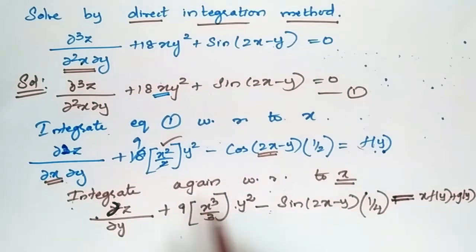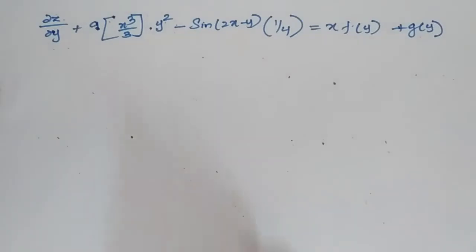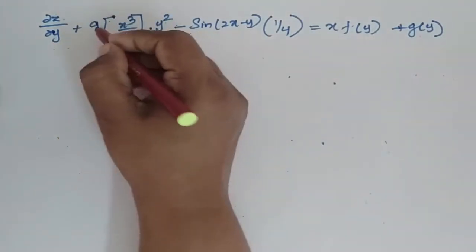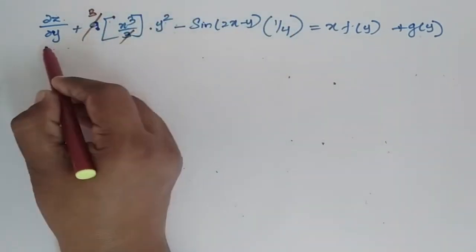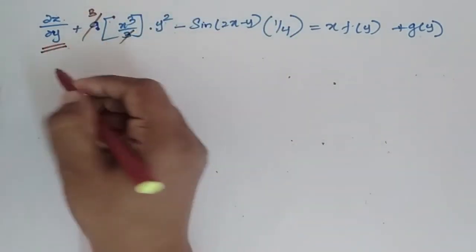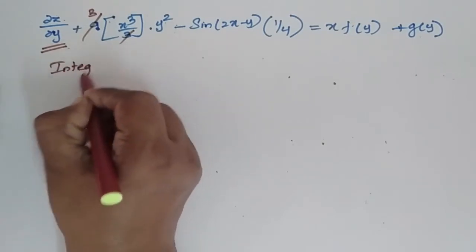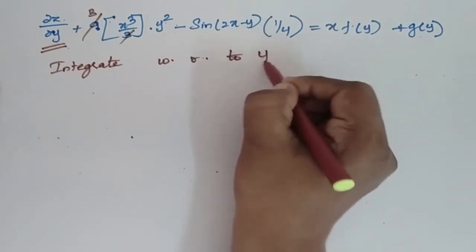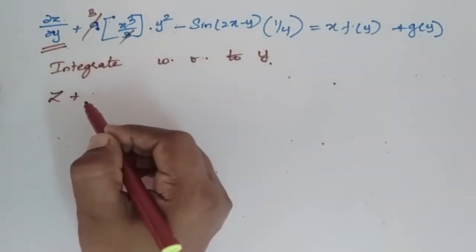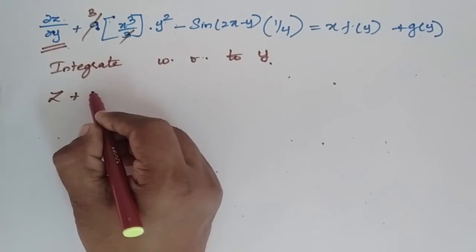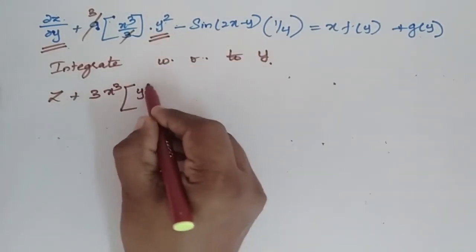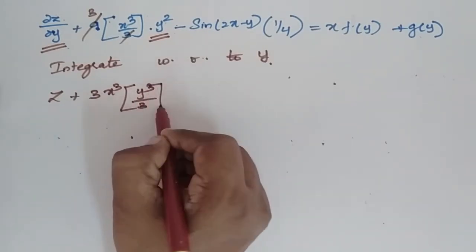Now we have to integrate this equation with respect to y. After integrating with respect to x we have an equation. I can simplify and get 3 here. Now integrating with respect to y, I will get z + 3 · x³ · (y³/3).